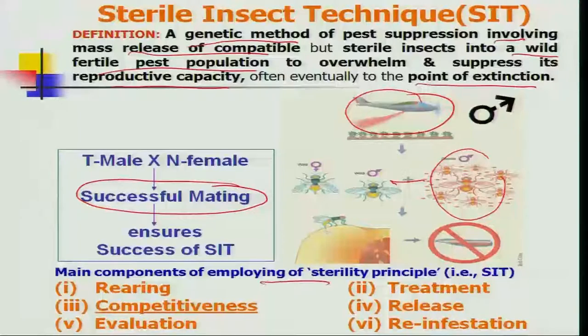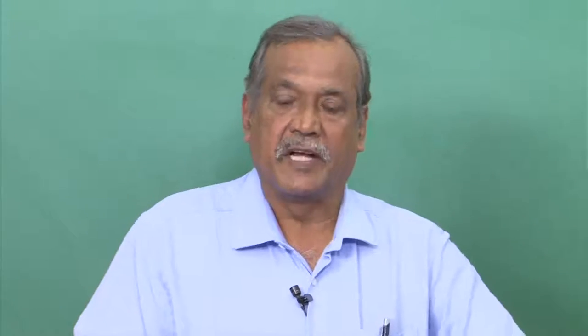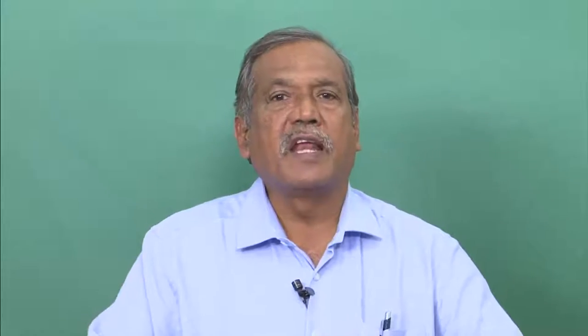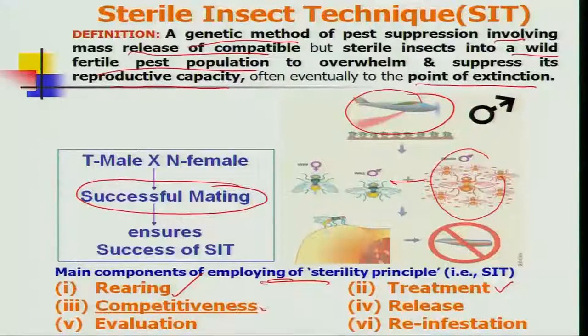SIT involves six principles. First is rearing — we need a standardized and cost-effective rearing technology for the pest species of interest. Second is treatment — the sterilization dosage needs to be standardized, preferably at a low dosage, for the technology to be most successful. Third and most important is competitiveness — the sterile insect must compete with natural males and females in flight and behavioral activities, particularly in mating, for SIT to be successful.